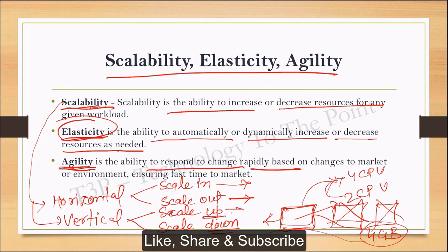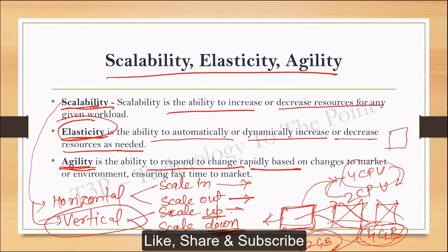Similarly, increasing the RAM also comes under scale up. When we reduce the configuration — for example from four CPUs to two CPUs, that is scale down. Similarly, four GB to two GB is scale down. So vertical scaling means working on the same system, either increasing or reducing its configuration. Scale in or scale out means adding or removing servers. This is what we have in scaling, elasticity, and agility.